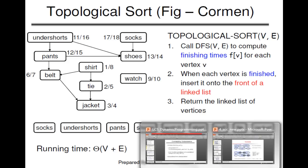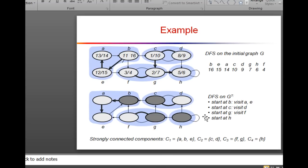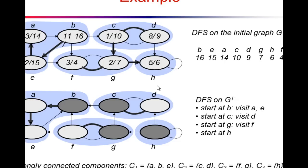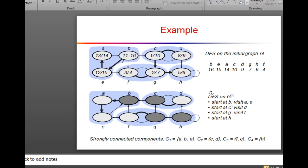So topological sorting is done. Let's move on to strongly connected components. How do we find strongly connected components? It's pretty easy — it's again an application of DFS. What we do is first compute the DFS of the initial graph, computing the starting and finishing time again, and then we note down the decreasing order of the finishing time, like 16, 15, 14 — the same thing we did with topological sort. After that, we compute DFS on the transpose of this graph.